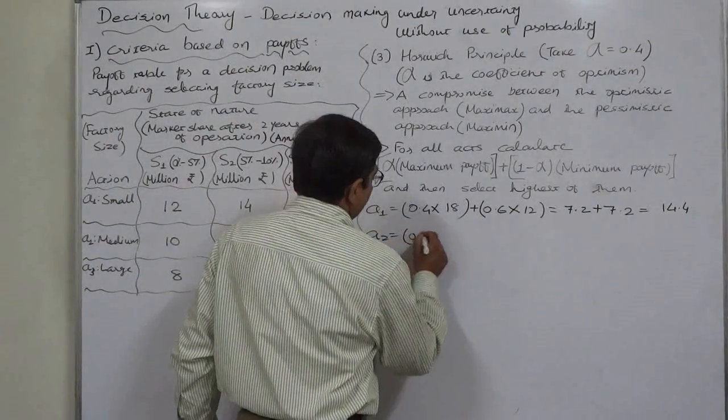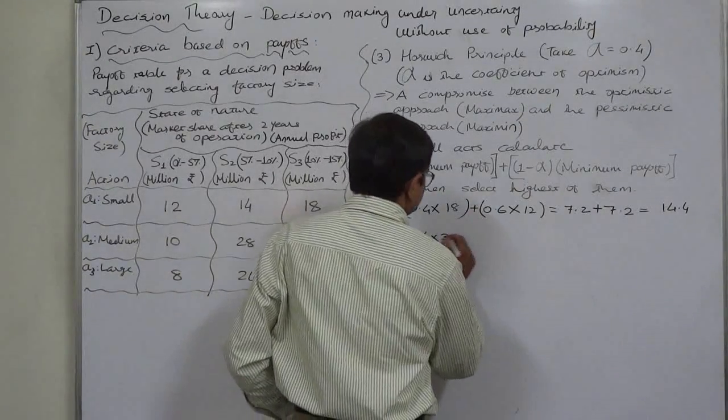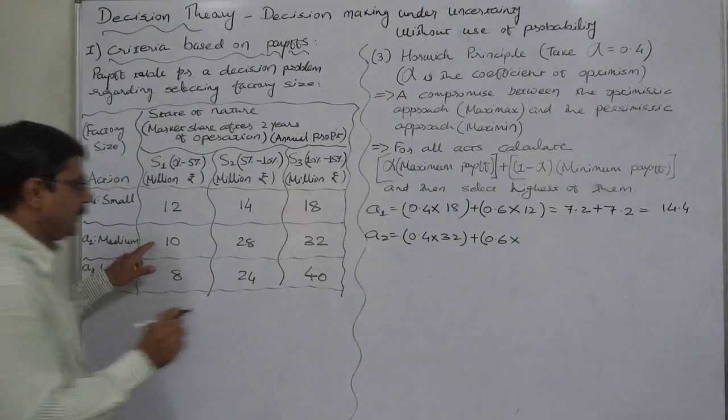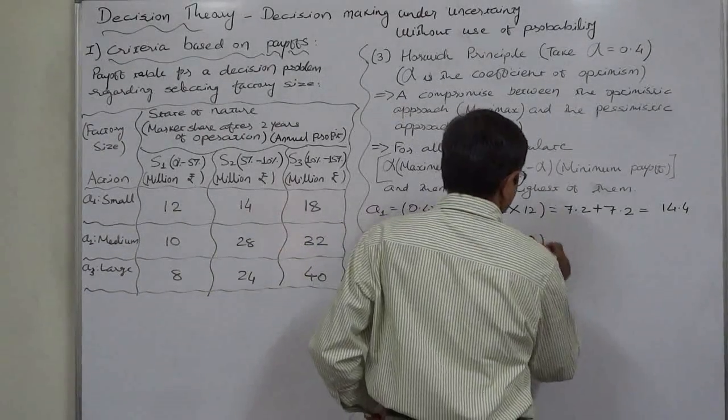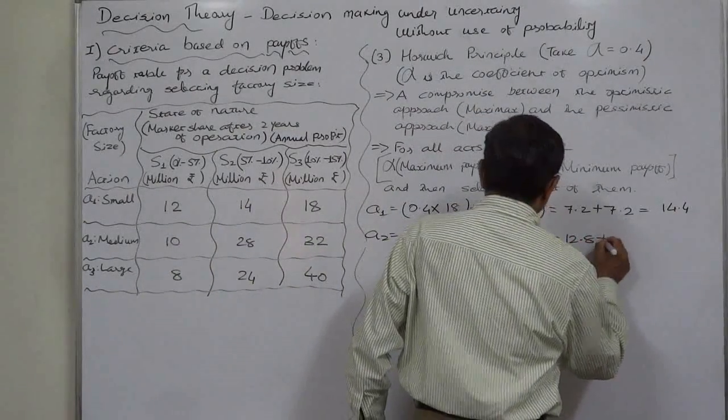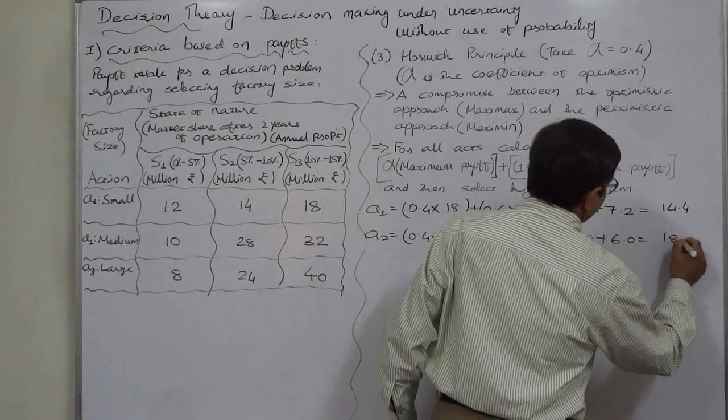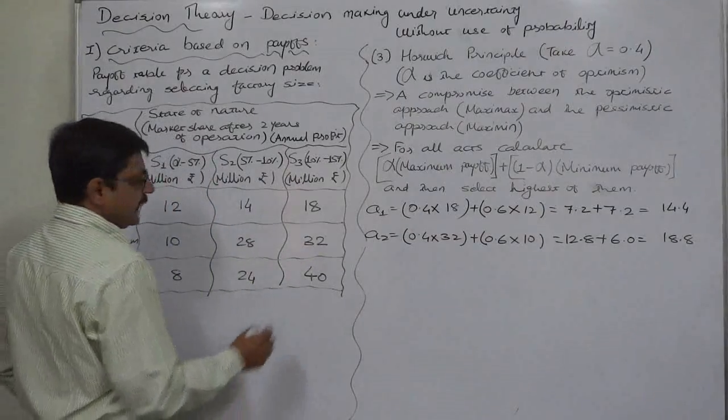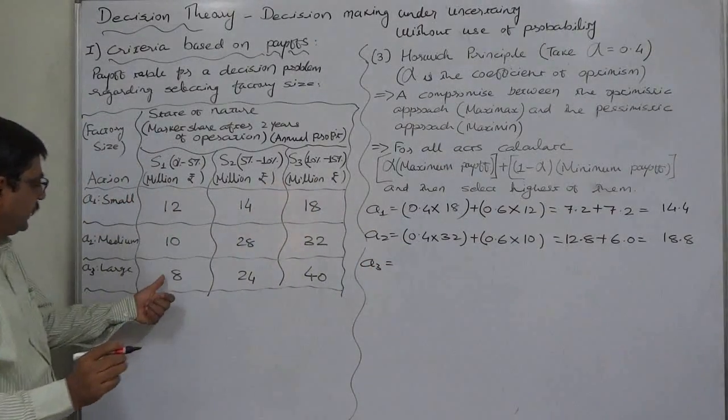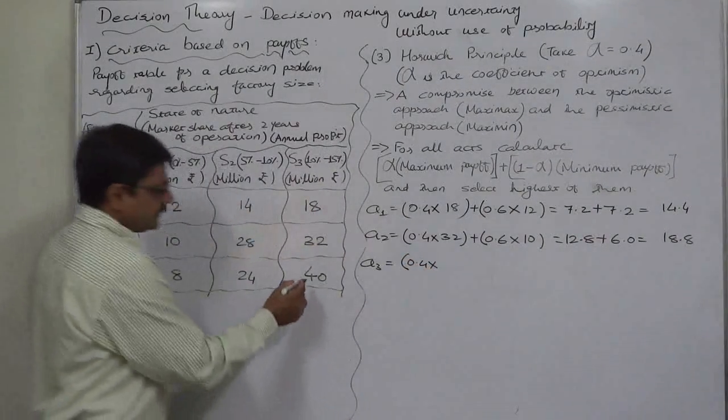For a2: alpha 0.4 into the maximum payoff of 32, plus 1 minus alpha, 0.6, into minimum 10, equals 12.8 plus 6, which is 18.8.